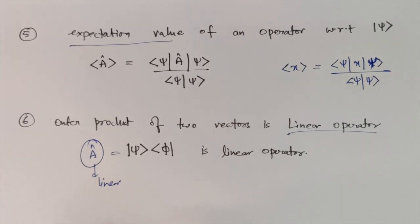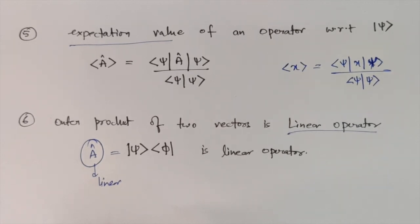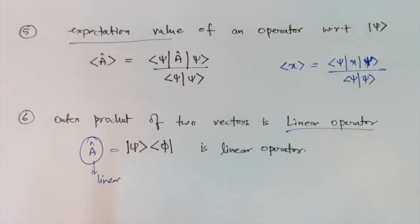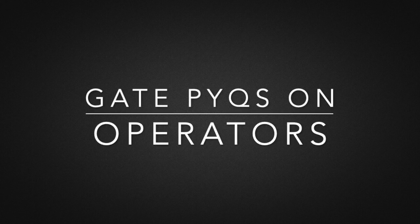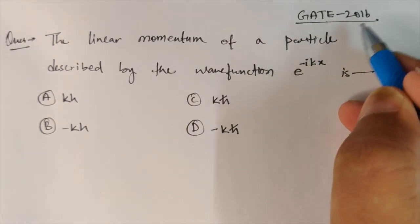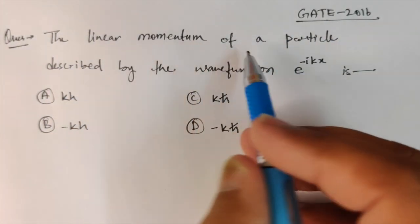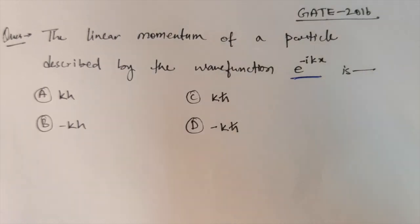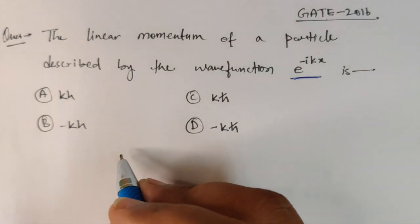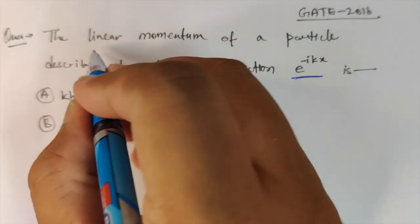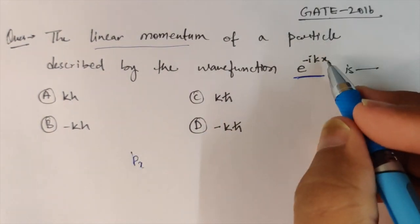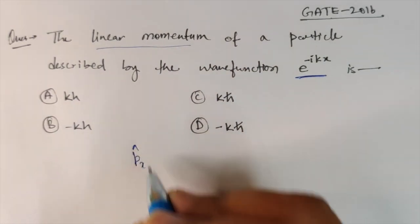Now we'll take some questions from previous years of GATE and CSIR-NET based on operators and see how to solve them. This was a question asked in GATE 2016: the linear momentum of a particle described by the wave function ψ = e^(−ikx). Since they're asking for linear momentum, we apply the linear momentum operator in the x direction on this wave function.